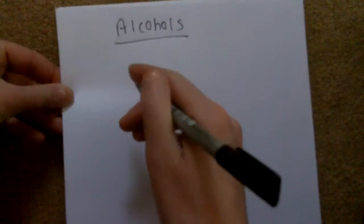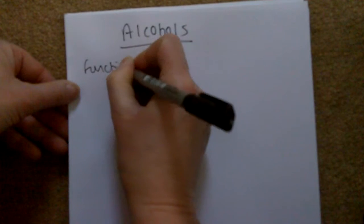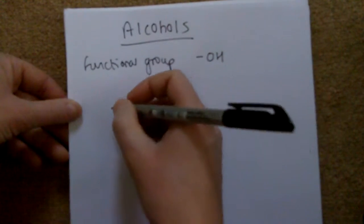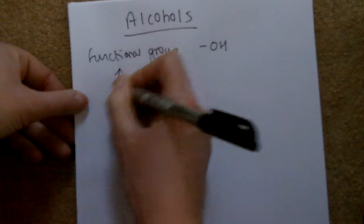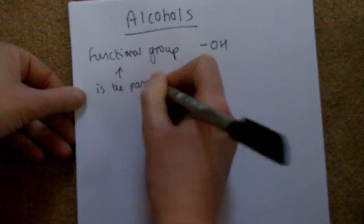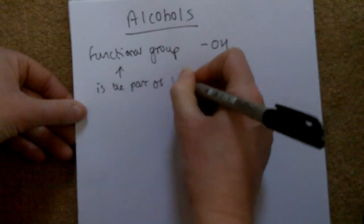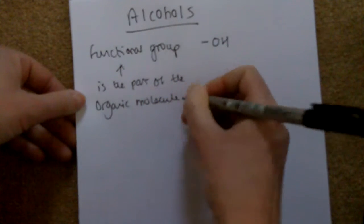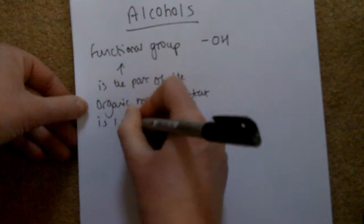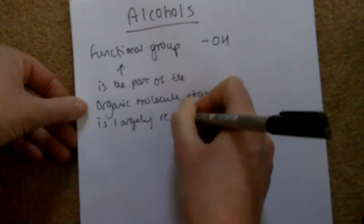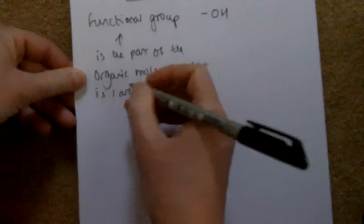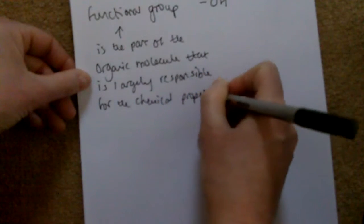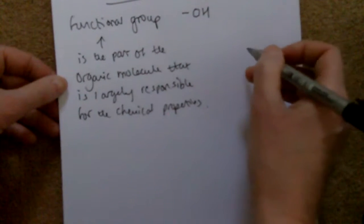Alcohols contain the functional group OH. The term 'functional group' means the part of the organic molecule that is largely responsible for the chemical properties of the molecule.